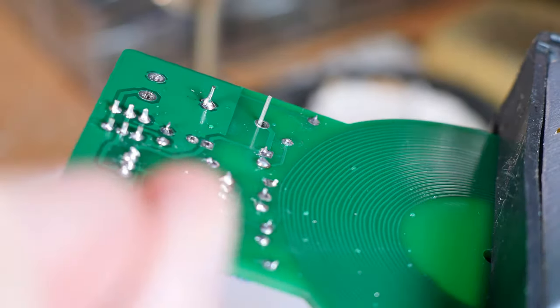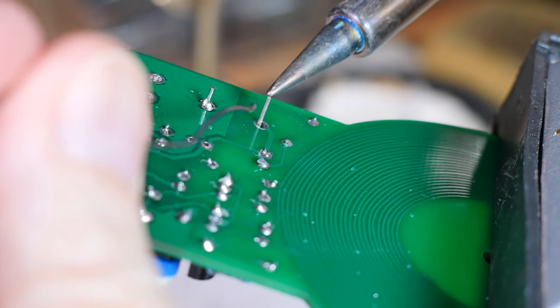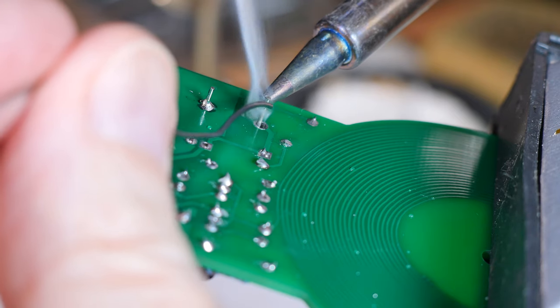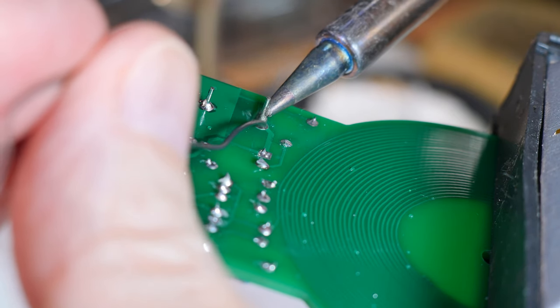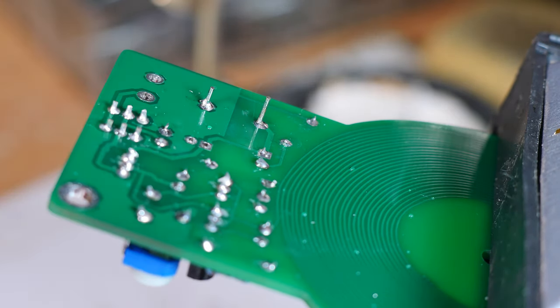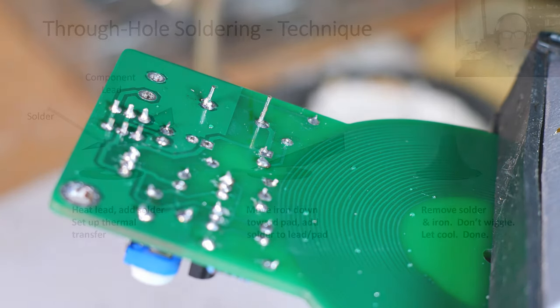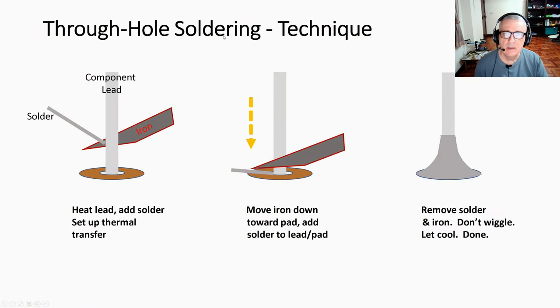For good through-hole soldering, start up higher on the lead and get your thermal conduction going, then move down to the hole, add just a touch of solder, pull away, and let it cool—you'll get a perfect solder connection every time. That's it for tips and tricks and techniques for through-hole soldering. I hope you found it useful and interesting in your DIY electronics projects.